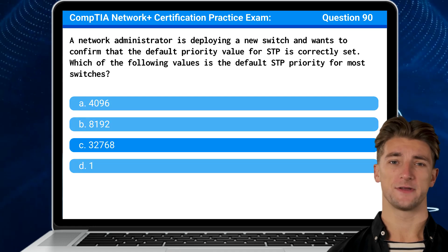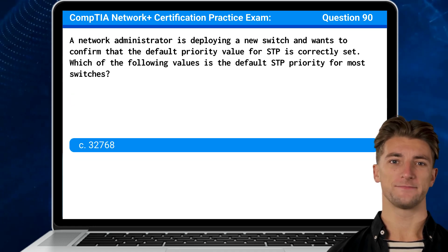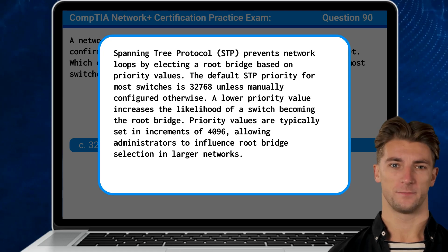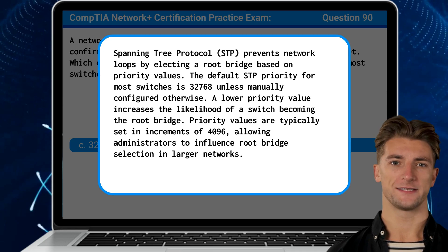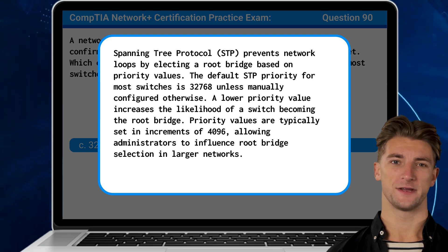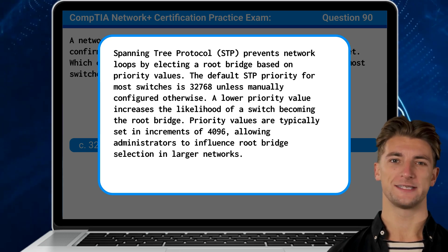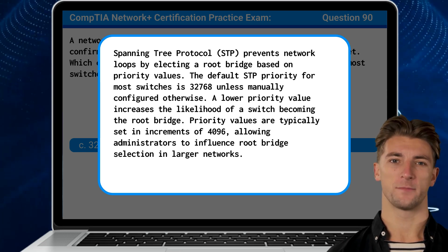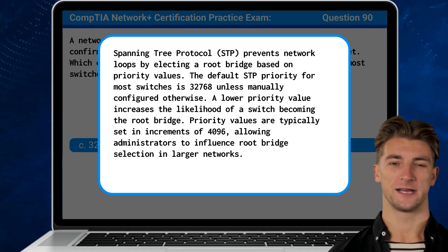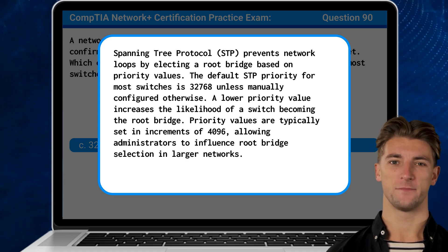The answer is C: 32768. Spanning Tree Protocol, or STP for short, prevents network loops by electing a root bridge based on priority values. The default STP priority for most switches is 32768 unless manually configured otherwise. A lower priority value increases the likelihood of a switch becoming the root bridge. Priority values are typically set in increments of 4096, allowing administrators to influence root bridge selection in larger networks.